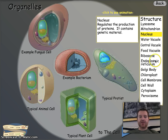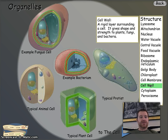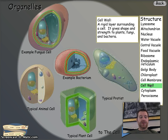The next one on your sheet is the cell wall. It says a rigid layer surrounding a cell gives shape and strength to plants, fungus, and bacteria. What you need to know is it gives shape and strength to plants. Looking at the diagram, it is yes in plant cells and no in animal cells.